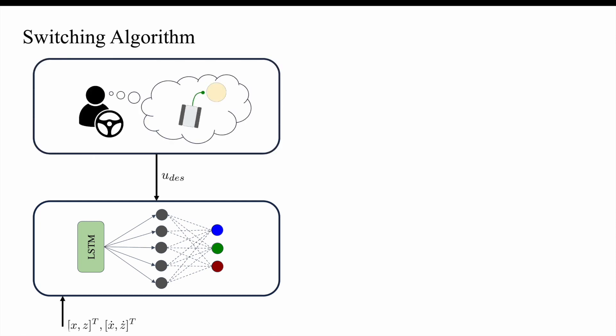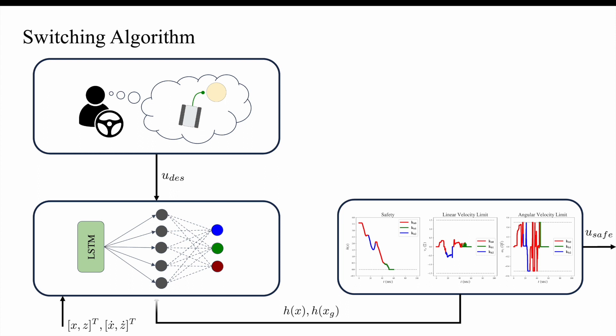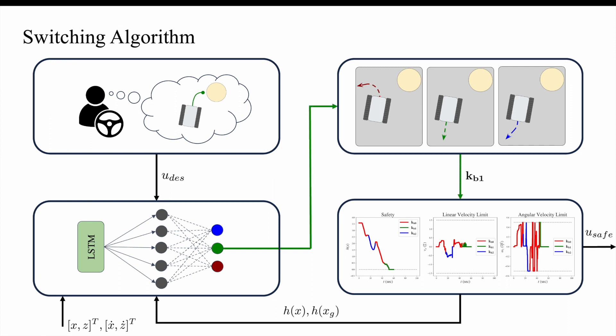First, we gather data from the user, the environment, and safety algorithms and transform them into rewards for each backup controller. Next, our learning algorithm provides the controller with the maximum calculated reward, in this case KB1, to the backup controller barrier function quadratic program using a predefined library of controllers.